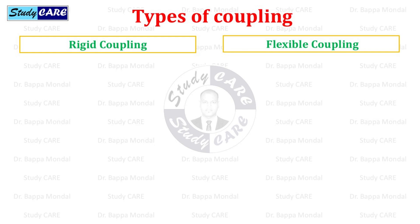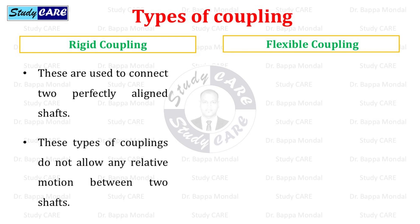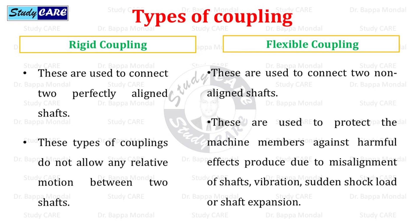Coupling can be classified into two types: rigid coupling and flexible coupling. Rigid couplings are used to connect two perfectly aligned shafts and do not allow any relative motion between two shafts. Flexible couplings are used to connect two non-aligned shafts and protect machine members against harmful effects due to misalignment, vibration, sudden shock load, or shaft expansion.